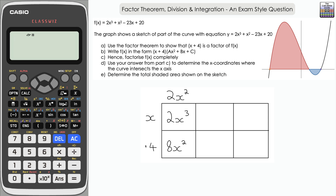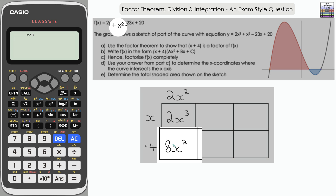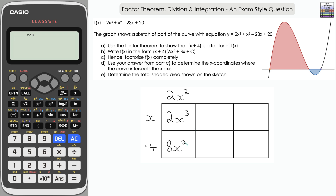Now compare the x² term in the grid so far with the x² term in f(x), which is just 1x². The two diagonally opposite cells combine to make the x² term. I need 8x² plus something to equal x², so I need negative 7x². Placing -7x² in that cell, then what do I multiply x by to get -7x²? That's -7x. Then -7x times positive 4 gives -28x.